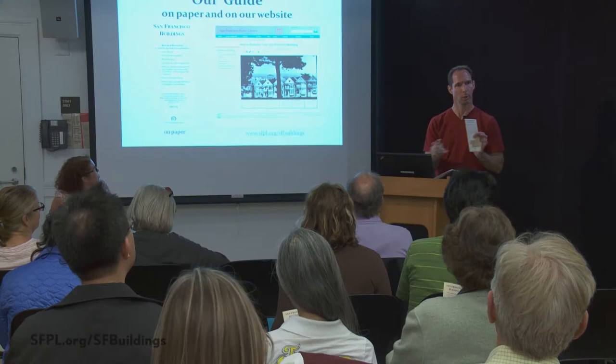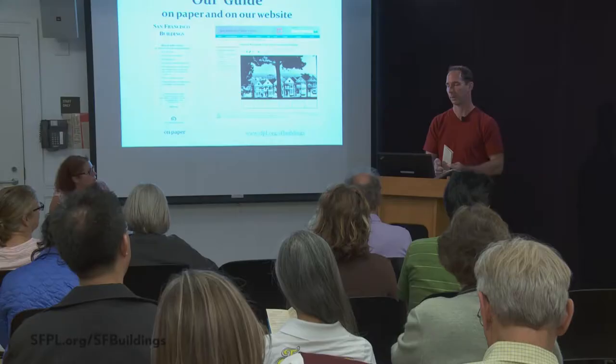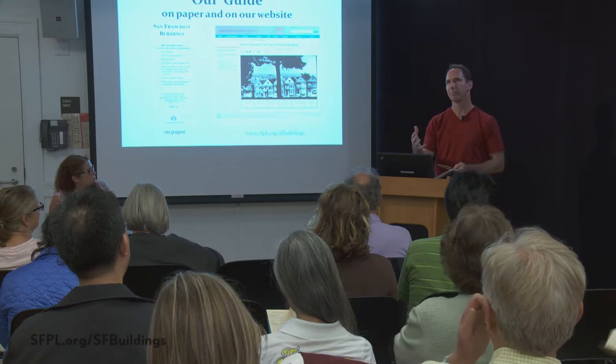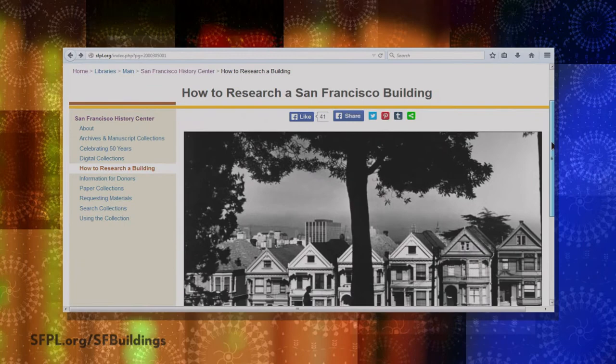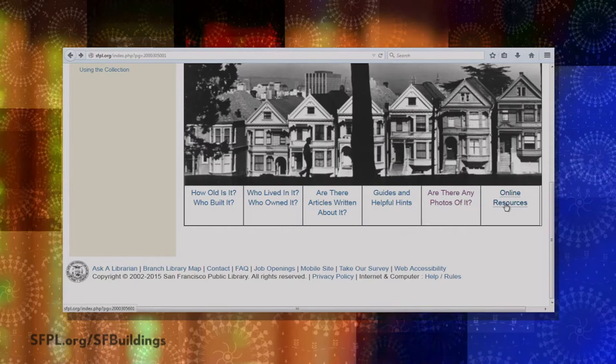Much of the same information, similarly formatted, is available through our website. You can go to SFPL.org SF history location, and that website will bring up a lot of information about the history center. One of the links is to 'How to Research a San Francisco Building,' with live links at the bottom. Anything that's online and fuller descriptions are available there.